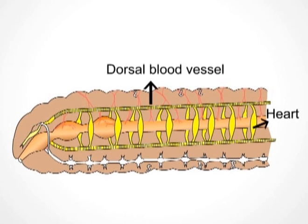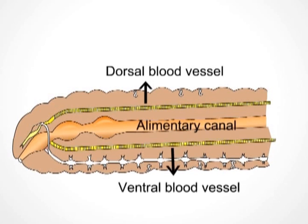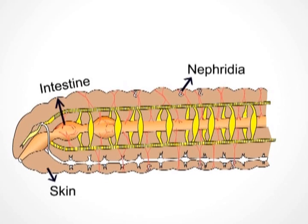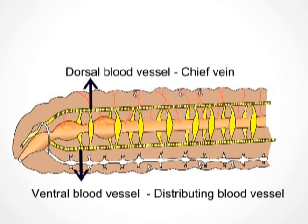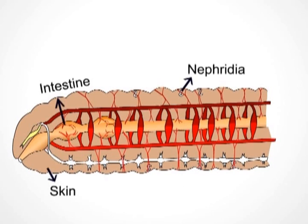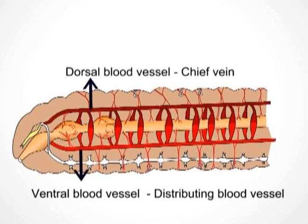Blood vessels are closed tubes connected to the heart. There are mainly two blood vessels: the dorsal blood vessel and the ventral blood vessel, located above and below the alimentary canal. The dorsal blood vessel acts as a collecting vessel — collecting blood from different organs via three pairs of blood vessels in each segment, including skin, nephridia, and intestine — and thus acts as the chief vein. The ventral blood vessel acts as a distributing vessel, distributing blood to the skin, nephridia, and intestine via three pairs of blood vessels per segment, and thus acts as the chief artery.